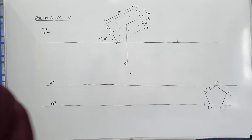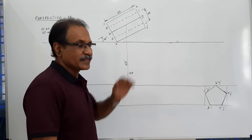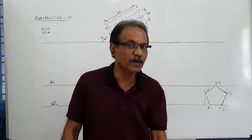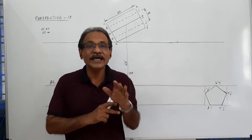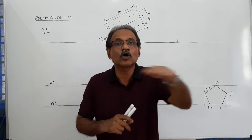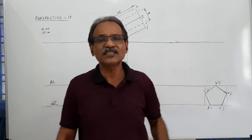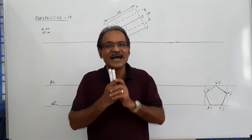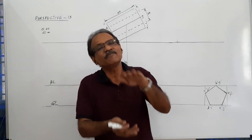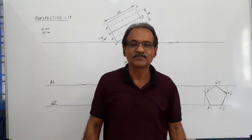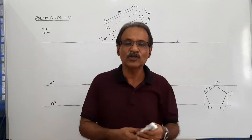The station point is 65 mm in front of PP. The central plane passes through the center of the prism. And the horizon is at the level of the top edge of the prism — meaning the height of the observer is equal to the height of the prism when it is lying.